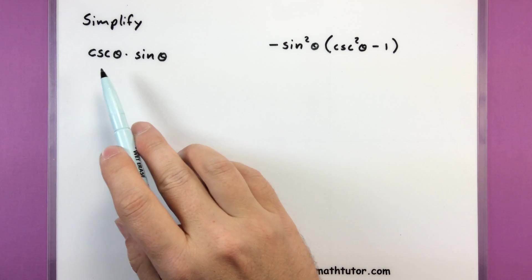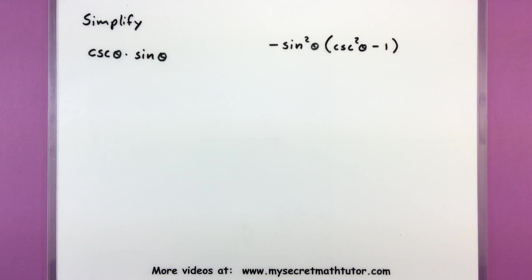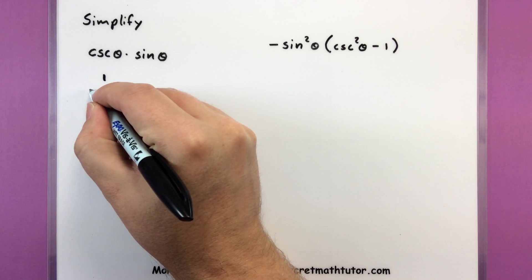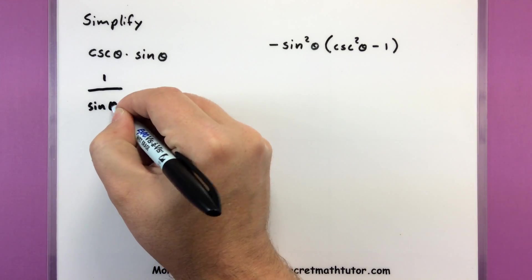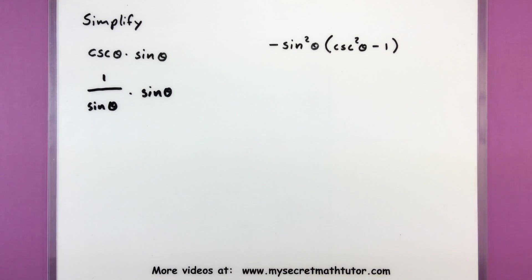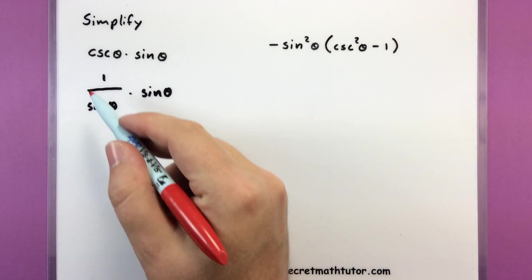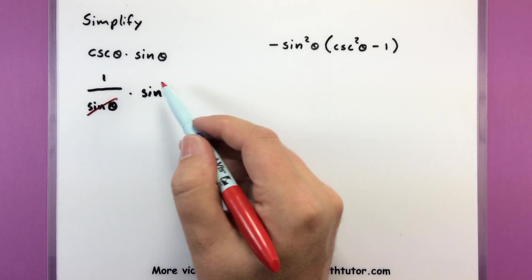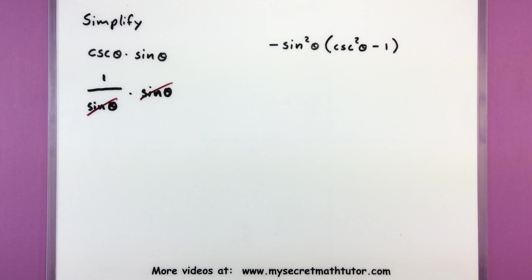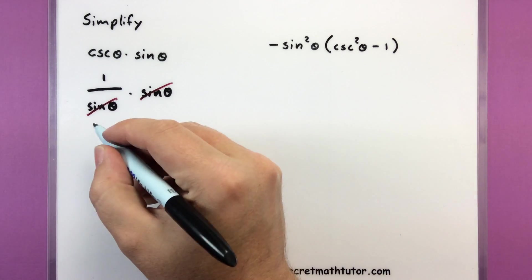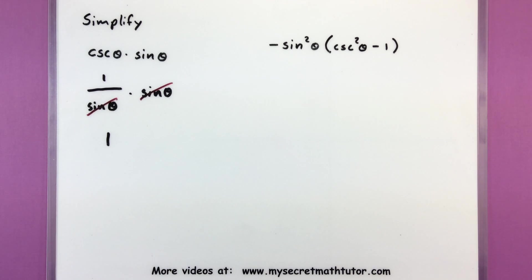For the first example we'll look at cosecant of theta multiplied by sine of theta. That looks fairly simple as it is, but we can use our reciprocal identity on the cosecant of theta. So cosecant of theta is equal to 1 divided by sine of theta. We're not going to do anything with the other sine because it's already a sine, and you can see that you get a sine in the bottom that will cancel with the numerator. Simply by writing cosecant as 1 over sine, the sines cancel and we'll only be left with 1.